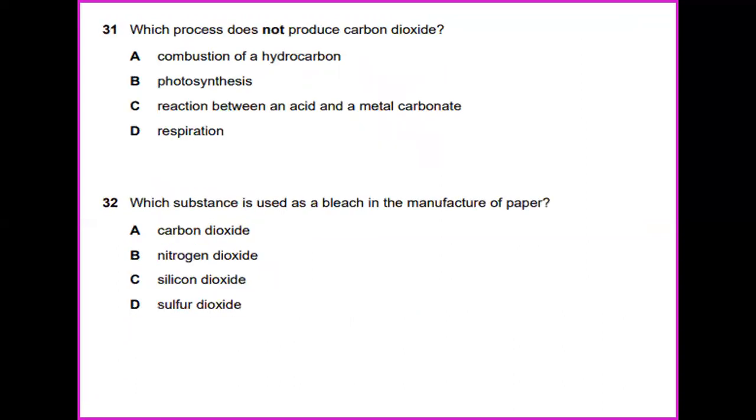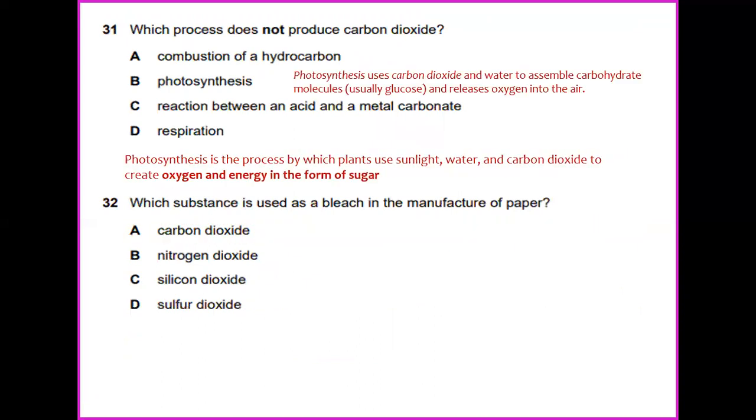Question 31. Which process does not produce carbon dioxide? Photosynthesis uses carbon dioxide and water to assemble carbohydrate molecules, usually glucose, and releases oxygen into the air. Photosynthesis is a process by which plants use sunlight, water, and carbon dioxide to create oxygen and energy in the form of sugar. So the answer which process does not produce carbon dioxide would be the process of photosynthesis.